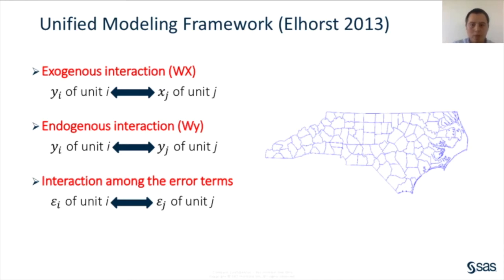Since neither Moran's I nor Geary's C is a model specification diagnostic, a natural question is: which model should we pick to account for spatial dependence? To answer this, we discuss a unified framework for spatial econometric modeling. Spatial dependence can arise from three different sources: exogenous interaction effects, where y for unit i depends on explanatory variable x in another unit j; endogenous interaction effects, where y for unit i depends on y in another unit j; and interaction among the errors, meaning errors in different units are correlated. Understanding these different forms of spatial dependence is crucial for spatial econometric modeling.